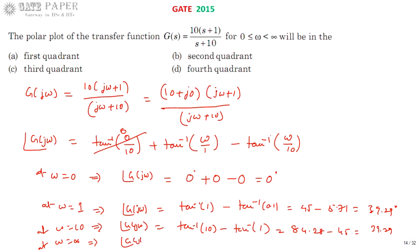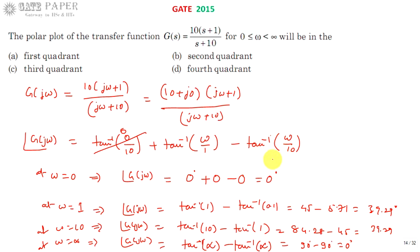At ω = infinity: tan⁻¹(∞) − tan⁻¹(∞) = 90° − 90° = 0 degrees. So if we observe the phase angle of this transfer function, it is 0°, rises to 39.29°, and returns to 0°. The phase angle of G(jω) stays between 0° and 90°.